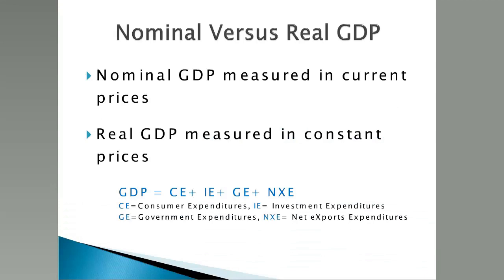The real GDP measures the output of the economy in constant dollars. These constant dollars are fixed from a specific year.